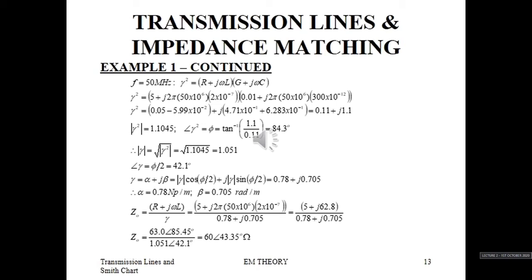Z₀ is again R + jωL over gamma, and when we solve this for 50 MHz, we find Z₀ equals 60 ohms at an angle of 43.35 degrees. We cannot say Z₀ is purely real at this frequency because the angle is fairly large — approximately 43 degrees — at 50 MHz.